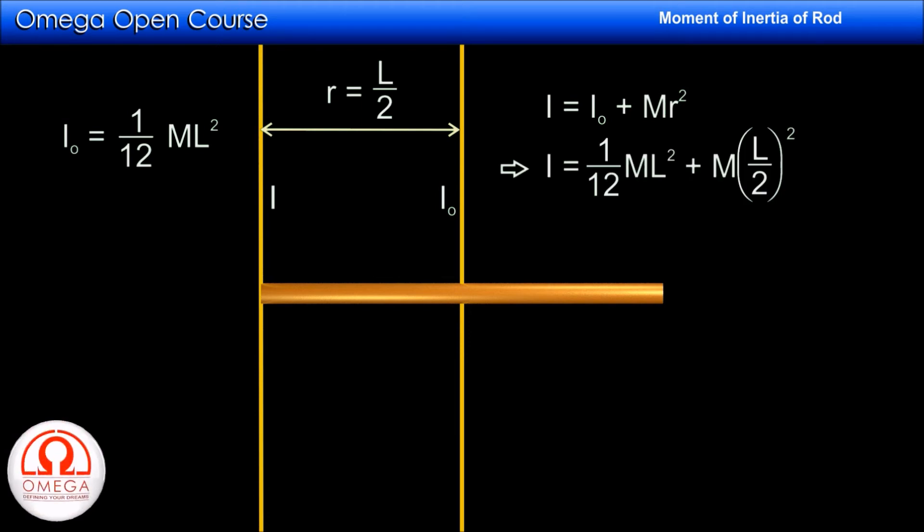Putting the values we get I = 1/12 mL² + m(L/2)². Simplifying we get I = 1/3 mL². Thus the moment of inertia of a rod about an axis perpendicular to the rod and passing through one of its ends is 1/3 mL².